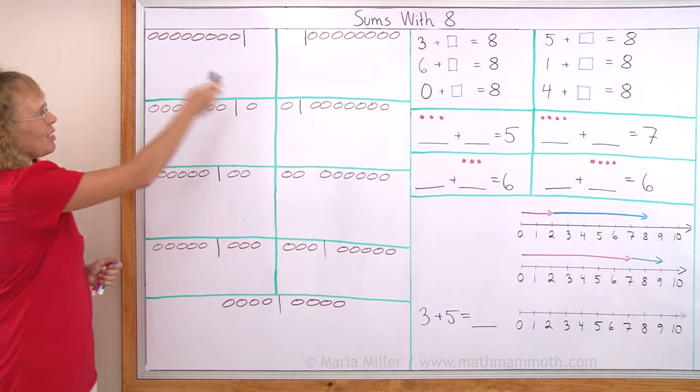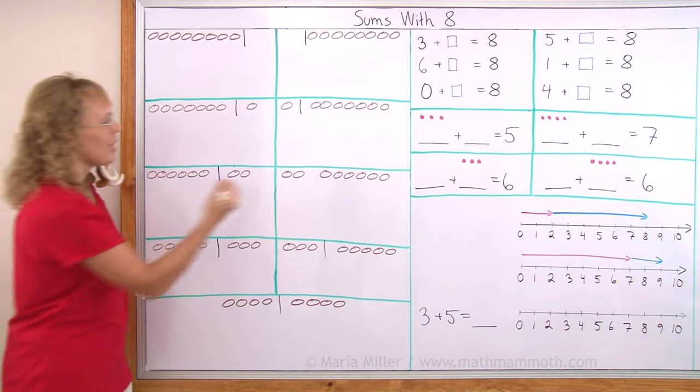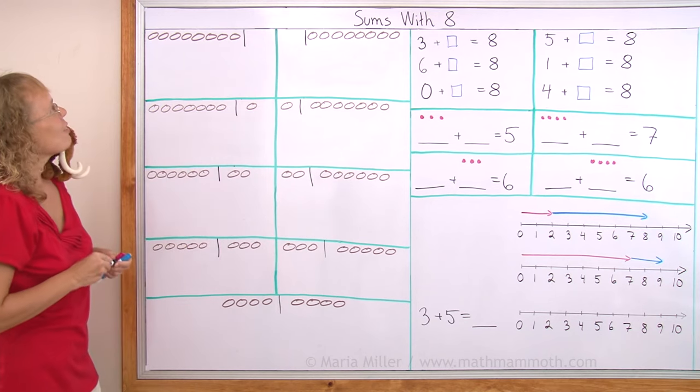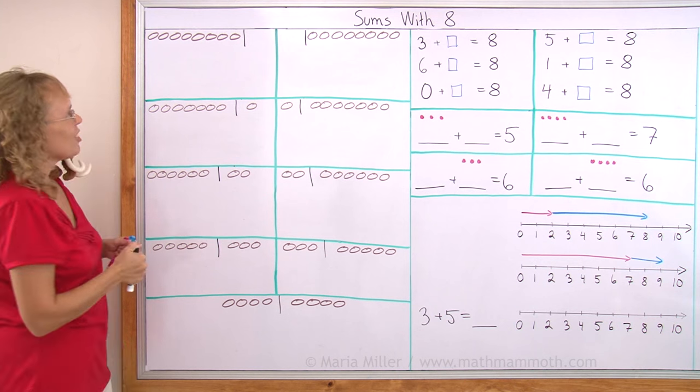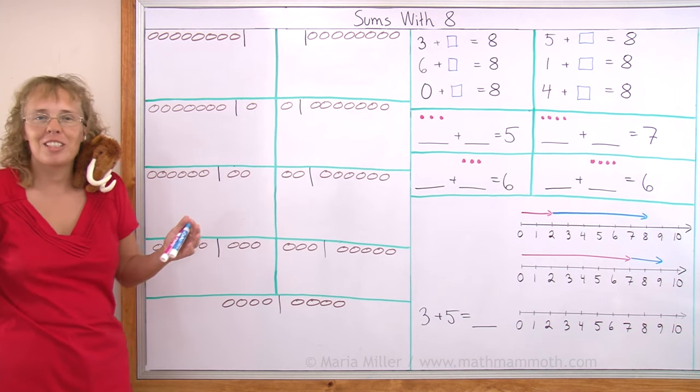And I have again my table where I have all these possible combinations. For example here we have 8, what are those? Cookies, right? You can think of them as whatever kind of cookies you like.